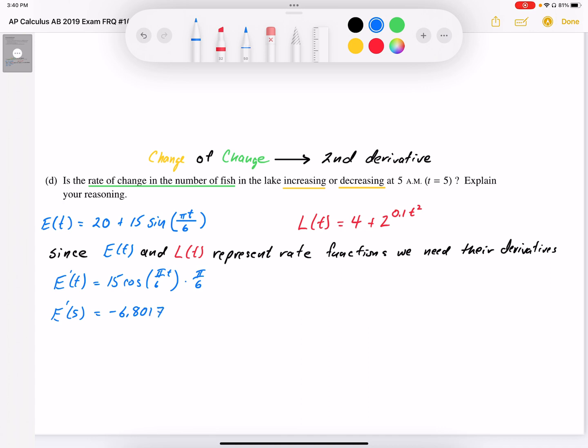So that's the rate of change of the fish entering the lake. So finding out the same thing for L, I need to find how the rate is changing. So I need the derivative of L.